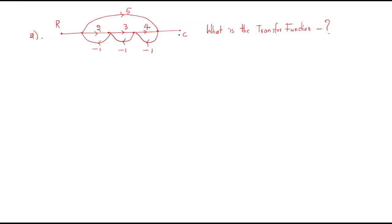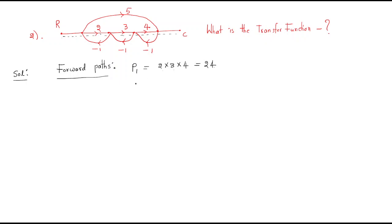Now look at the next problem: find the transfer function from R to C. Before applying Mason's formula, first identify all forward paths. The first forward path P1 goes through gains 2, 3, and 4, giving P1 = 2×3×4 = 24. The second forward path P2 has gain 5. So forward path gains are P1 = 24 and P2 = 5.